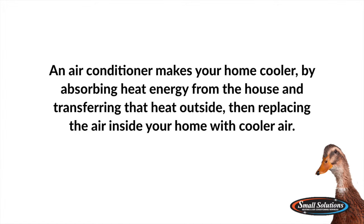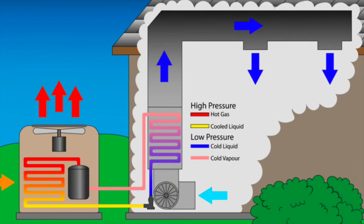An air conditioner makes your home cooler by absorbing heat energy from the house and transferring it outside, and then it replaces the air inside your home with cooler air. An air conditioning system essentially has four parts: an evaporator, a compressor, a condenser, and an expansion device.